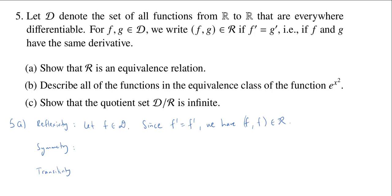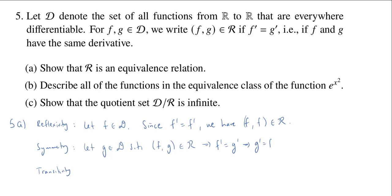For symmetry, we assume we have a pair of functions whose ordered pair really is in R. I already have an f, so let g be in D such that (f, g) ∈ R. By definition this means f prime equals g prime. But by the symmetry of equality, this implies g prime equals f prime, and this implies (g, f) ∈ R. So we get symmetry.